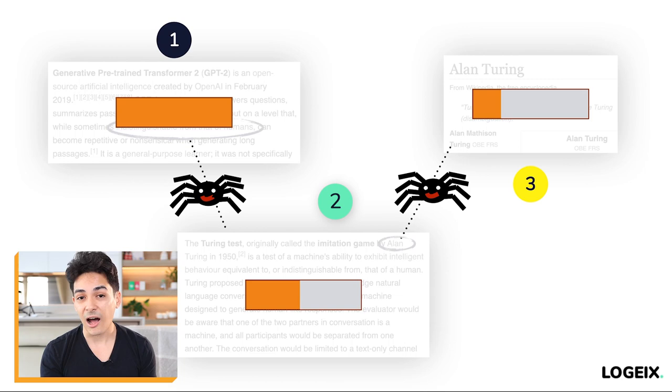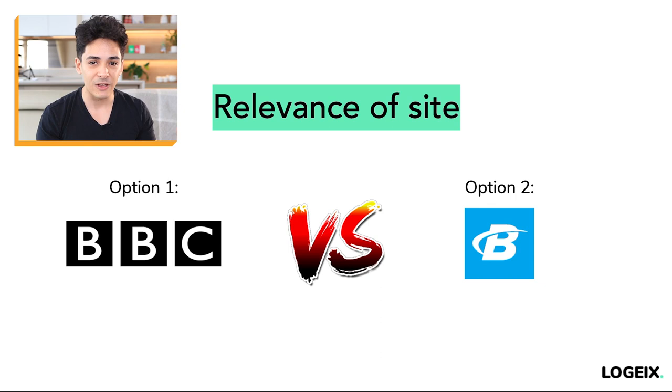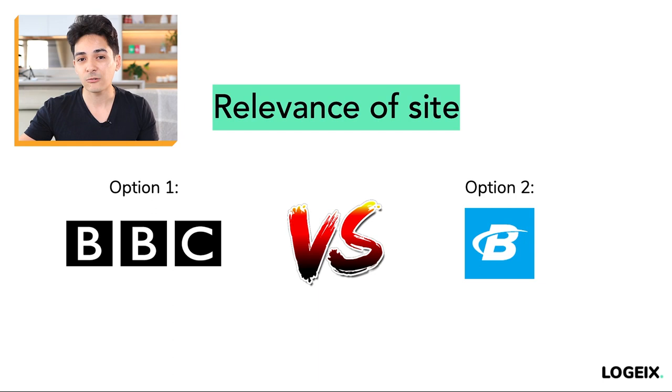You also have relevance of the site. Remember the concept of authority, relevance, and trust from the very first video — you want to simultaneously hit all of these factors. If you have a really strong authority link but it has no relevance, versus a site that is not nearly as much an authority but is highly relevant, you may actually get a better boost from the relevant link. For example: would you prefer a link from the BBC or bodybuilding.com if you have a health and fitness website? I may actually prefer the bodybuilding.com link — despite it not being as much an authority as the BBC, it's probably the biggest authority site in the health niche, and massively relevant to your own website.